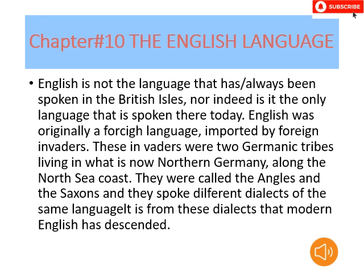English is not the language that has always been spoken in the British Isles; indeed, it is the only language spoken there today. English was originally a foreign language imported by foreign invaders. These invaders were two Germanic tribes living in what is now Northern Germany, along the North Sea. They were called the Angles and Saxons, and they spoke different dialects of the same language.